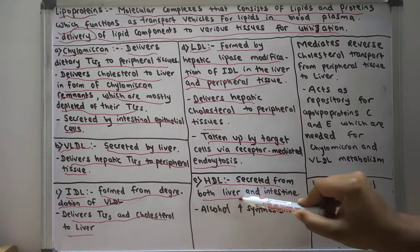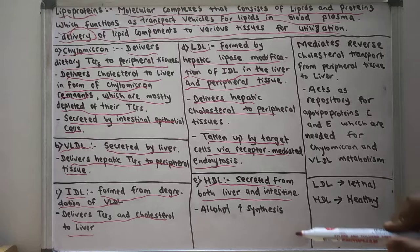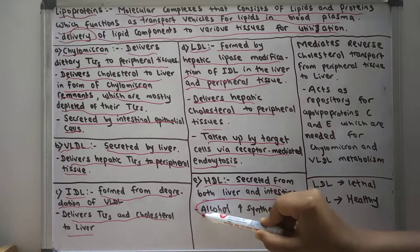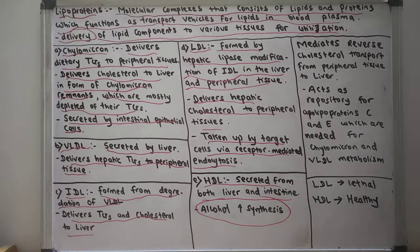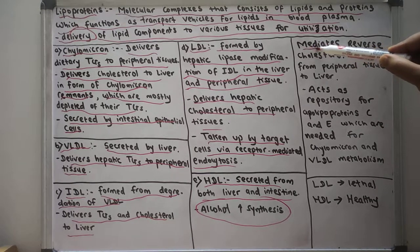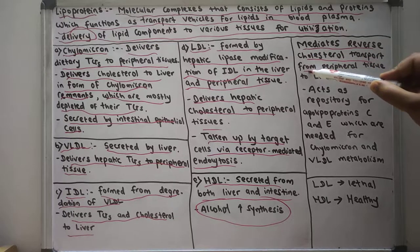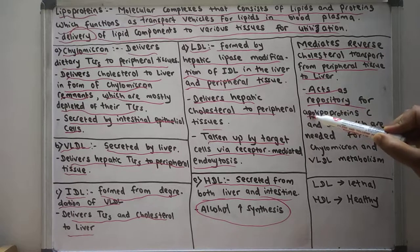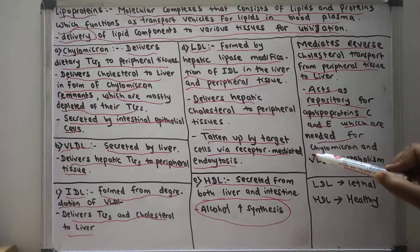High density lipoprotein (HDL) is secreted from both the liver and intestine. Alcohol intake increases HDL synthesis. HDL mediates reverse cholesterol transport from the peripheral tissues to the liver. It also acts as a repository for apolipoprotein C and E, which are needed for chylomicron and VLDL metabolism.